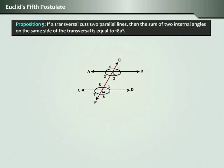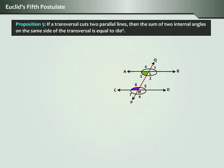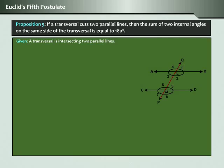Proposition 5: if a transversal cuts two parallel lines, then the sum of two interior angles on the same side of the transversal is equal to 180 degrees. What is given: a transversal is intersecting two parallel lines. What we need to prove is that the sum of interior angles on the same side of the transversal is equal to 180 degrees.